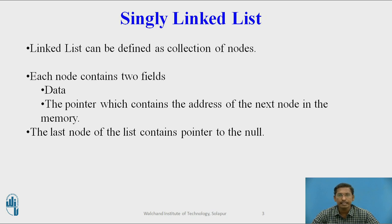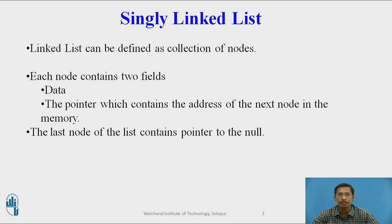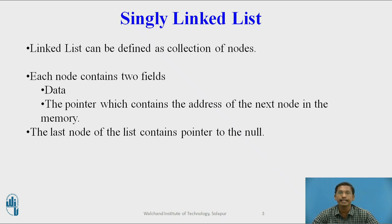We will see first what is a singly linked list. A linked list can be defined as a collection of nodes where each node contains two fields in general. First one is a data part — we can use an integer value as a data part. And second one is a pointer which contains the address of the next node in memory. The last node of the linked list contains null, indicating that this is the end of the linked list.